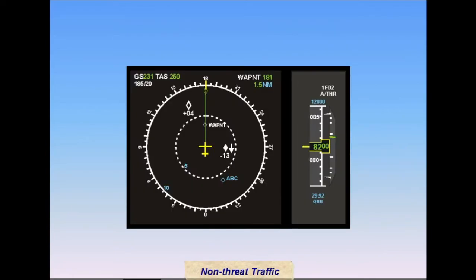Proximate advisory symbols, PAs, are displayed for non-threat aircraft within 6 miles laterally and 1,200 feet vertically. Other transponder-encoder-equipped non-threat traffic within 2,700 feet vertically are shown as hollow white diamonds. The display may be switched to show all transponder-equipped traffic up to 9,900 feet above or below your own altitude.